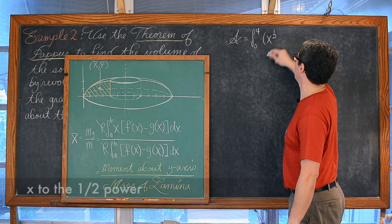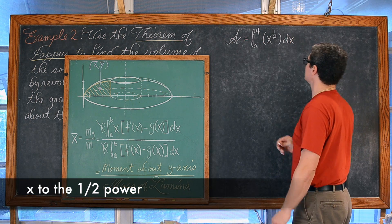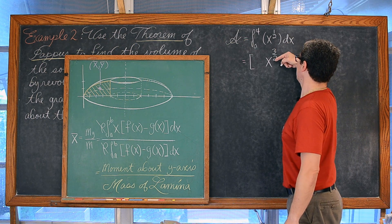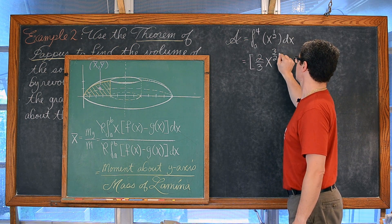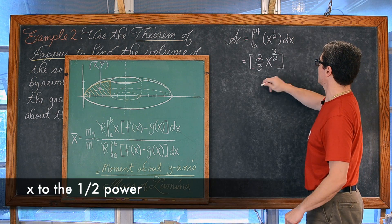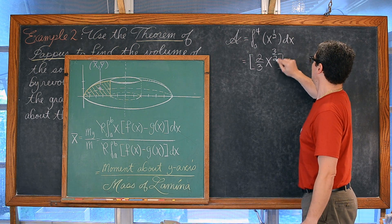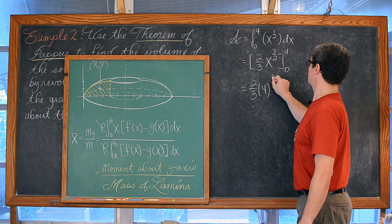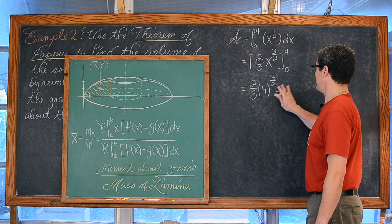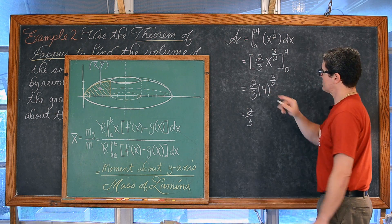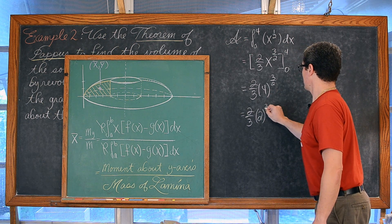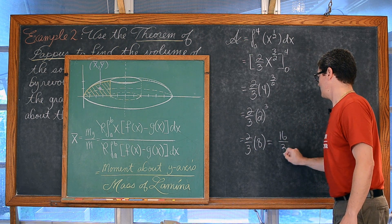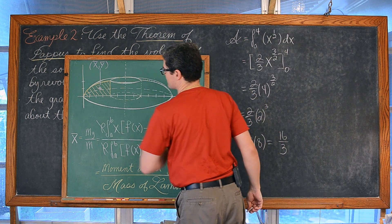Applying the power rule, we raise the exponent by 1 and multiply by 2/3, giving us 2/3 · x^(3/2) evaluated from 0 to 4. That is 2/3 times 4^(3/2). The square root of 4 is 2, raised to the third power is 8, so we have 2/3 times 8, which equals 16/3. That is the area of this plane region.